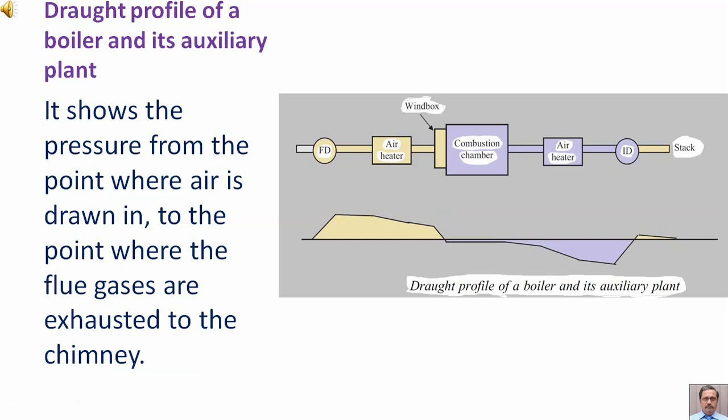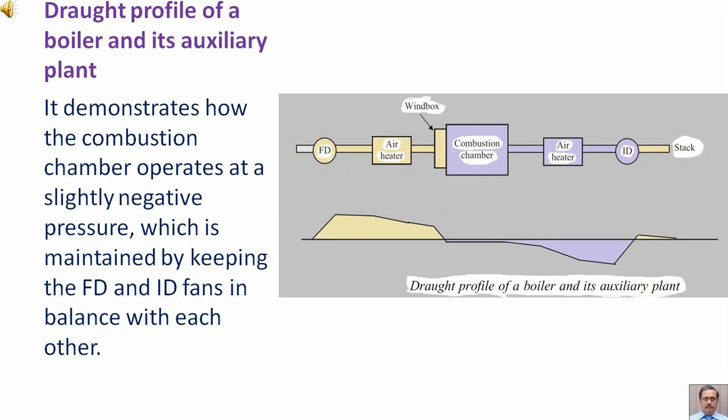It shows the pressure from the point where air is drawn in to the point where the flue gases are exhausted to the chimney. It demonstrates how the combustion chamber operates at a slightly negative pressure, which is maintained by keeping the FD and ID fans in balance with each other.